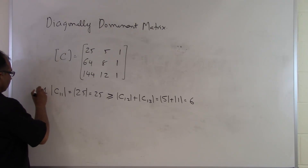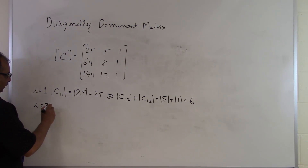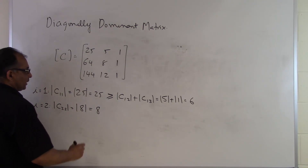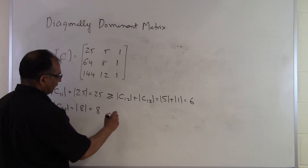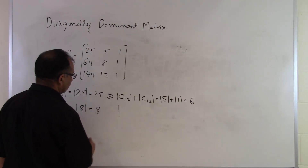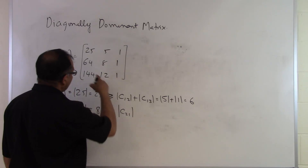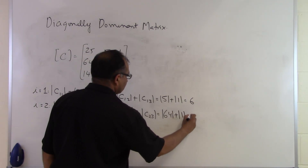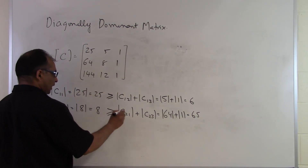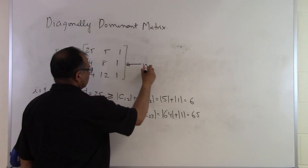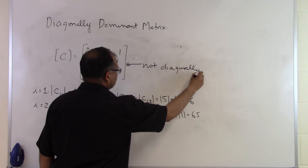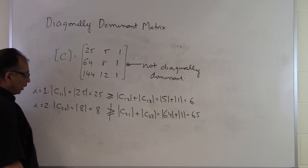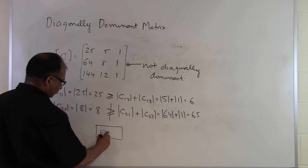For i = 2, the diagonal element is C_22 = 8, so |8| = 8. The remaining elements in that row are C_21 and C_23, giving |64| + |1| = 65. Is 8 ≥ 65? No. So matrix C automatically fails the diagonal dominance condition for row 2. I don't need to check row 3 — it has already violated the inequality, so this matrix is not diagonally dominant.